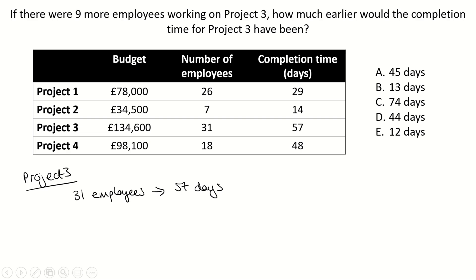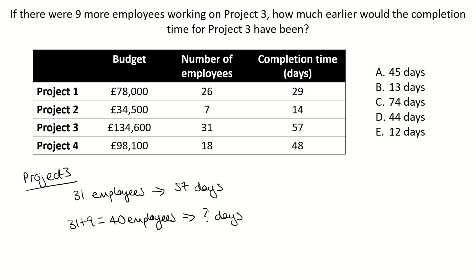So we want to know: if we add nine more employees to Project 3, how much earlier would the completion time have been? How much earlier would it have been? We know if we add more employees it's going to be quicker.